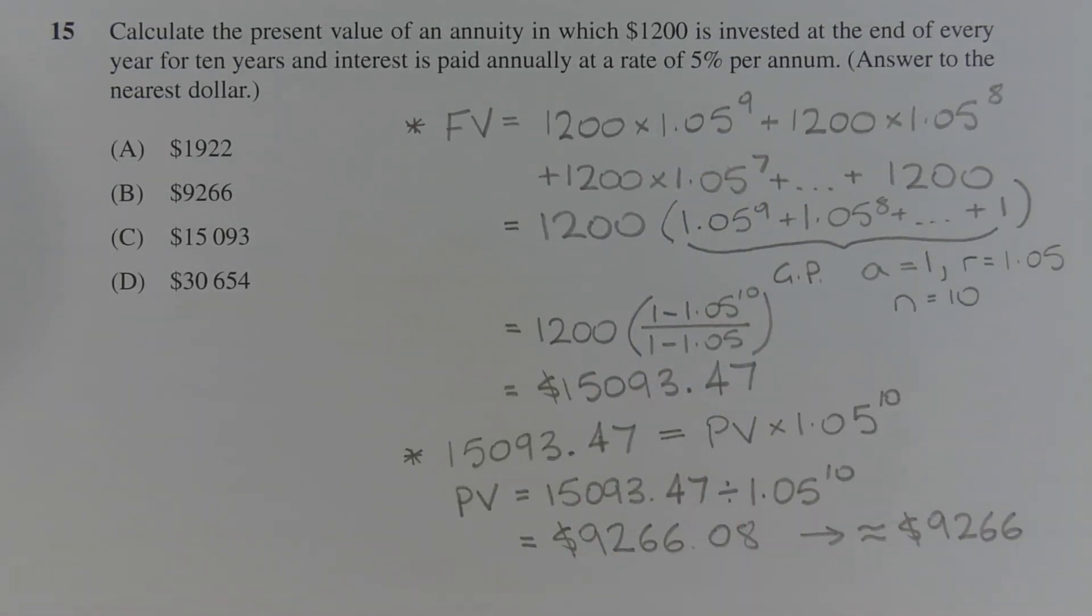Now the second contribution of $1,200 is going to sit in the bank for 8 years since it's deposited at the end of the second year. So its future value or its contribution to the future value of the annuity is 1,200 times 1.05 to the power of 8.